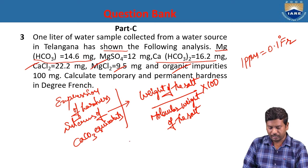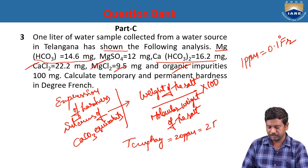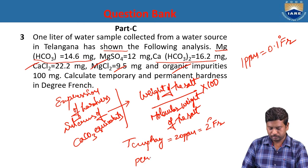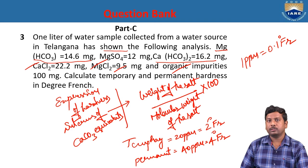Finally, for Problem 3, temporary hardness is 20 ppm converted to 2 degree French, and permanent hardness gives 4 degree French.